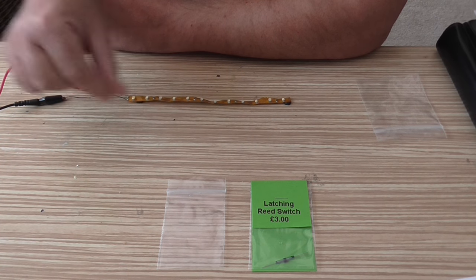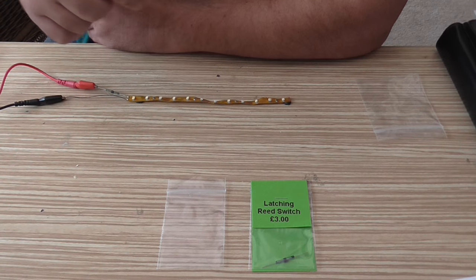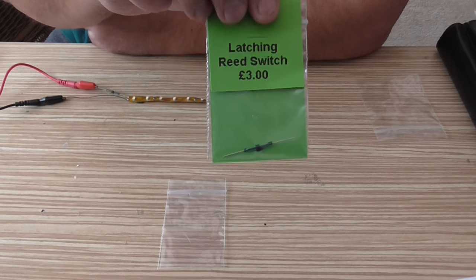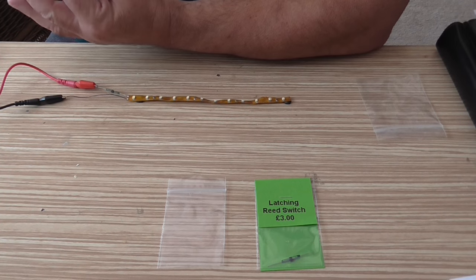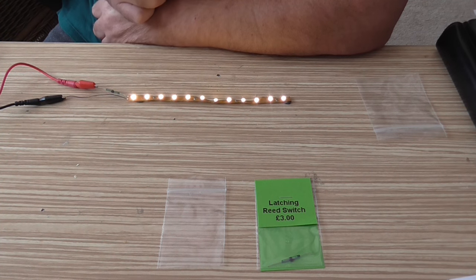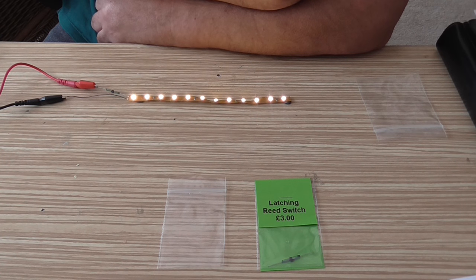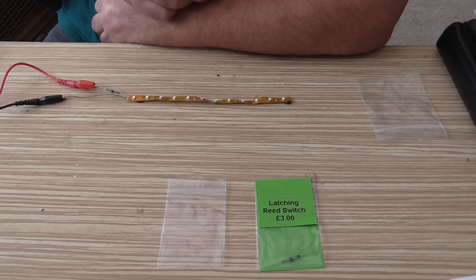This one, being a latched reed switch, you can have them always on. I'll just switch them on like that, and it'll stay on. I can move the magnet away, or I can just switch them off by putting the magnet over them like that. Switch them on, switch them off.